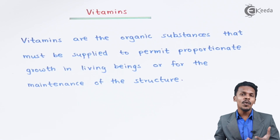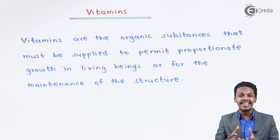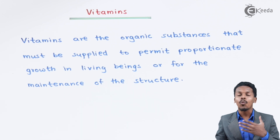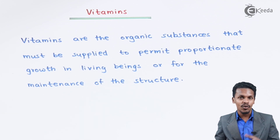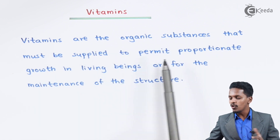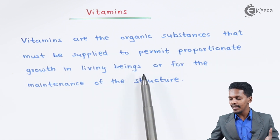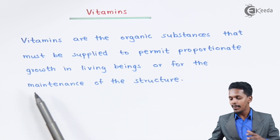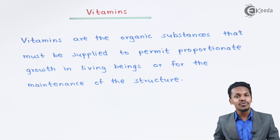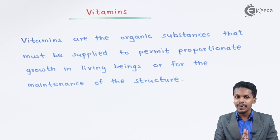When we are talking about vitamins, they are very much essential for our body and they are needed in small amounts. Vitamins are organic substances that must be supplied to permit proportionate growth in living beings — that is for humans — or for the maintenance of the body structure.